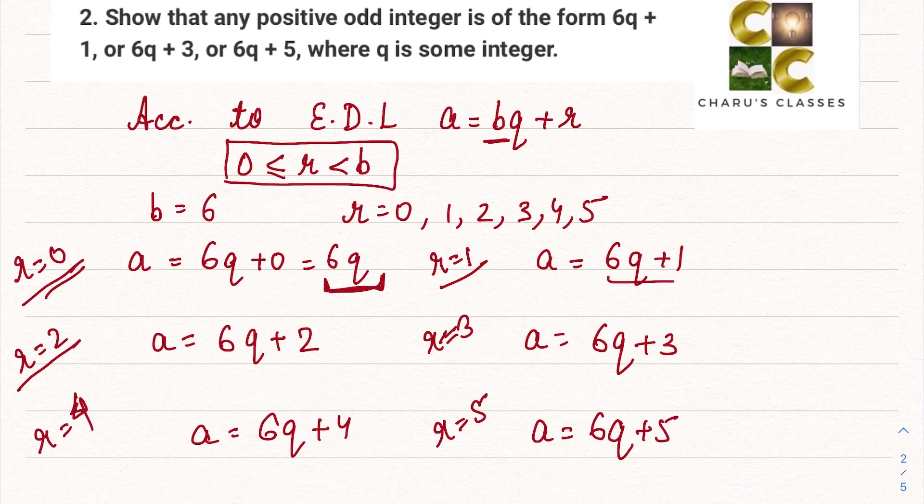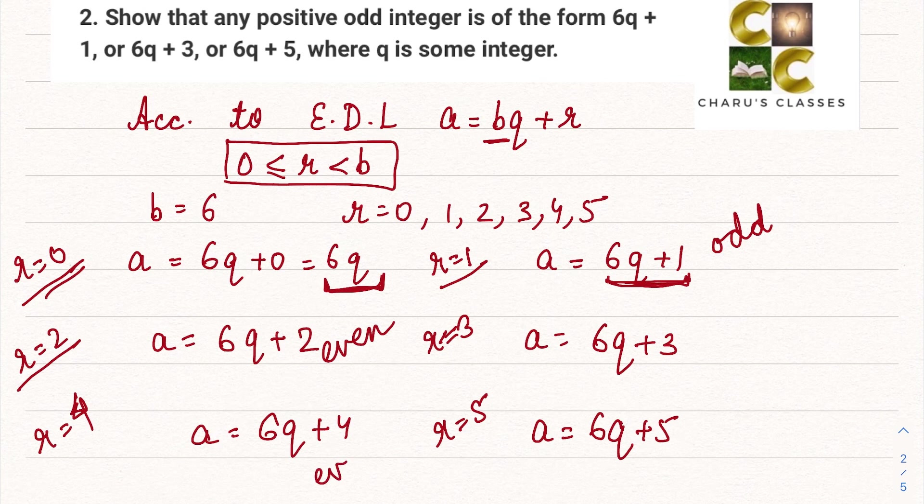And 6q + 1, if you add 1 to any even number, this is going to be an odd number. Again 6q + 2 will be an even number. 6q + 4 will be an even number. But 6q + 3 and 6q + 5 they will be odd numbers.